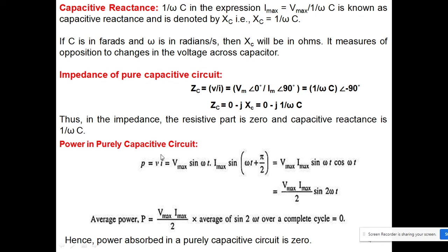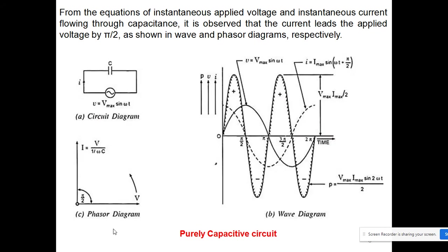Now we calculate power using p = vi. This is the instantaneous power; putting in all the values gives a term at double frequency 2ω. If we take the average power over a complete cycle, this becomes equal to zero. So the power absorbed in a pure capacitive circuit is zero. The positive power in one quarter equals the negative power in the next quarter, so the average is zero. The instantaneous maximum power is as given, but its average is zero.